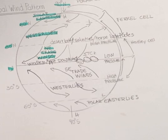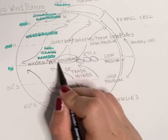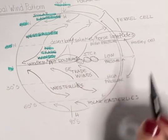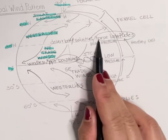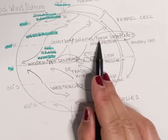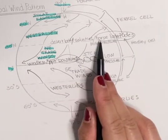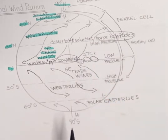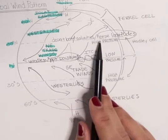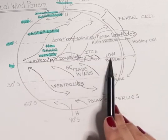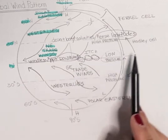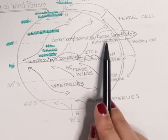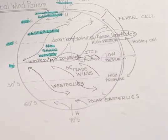So just a couple of interesting facts: the doldrums and the horse latitudes are known by oceanographers and navigators as a result of the low pressure and high pressure areas that occur at zero and 30 degrees north.